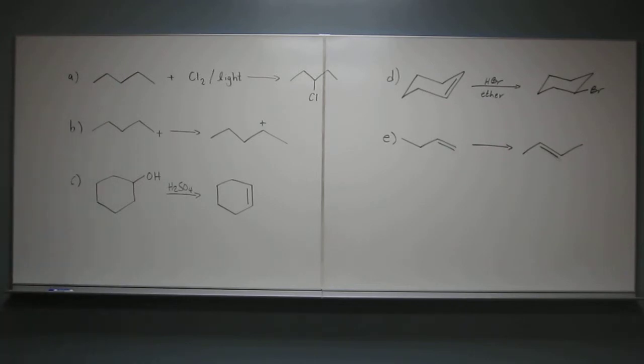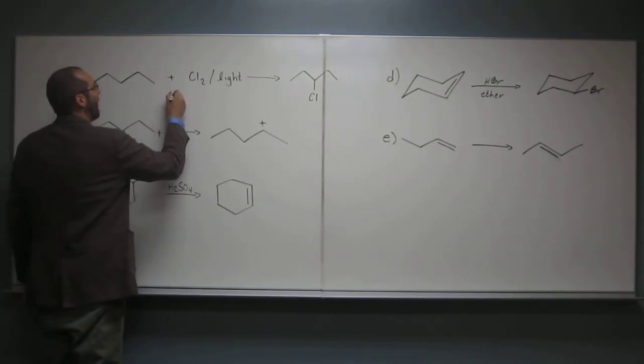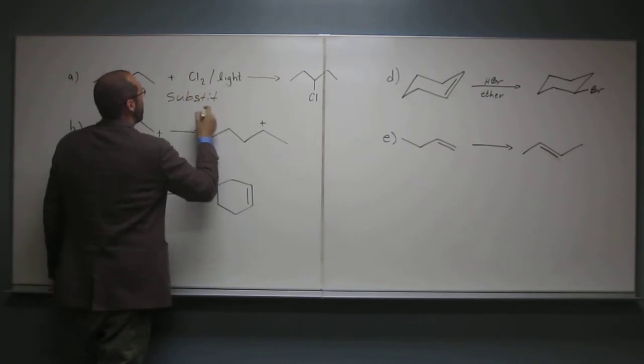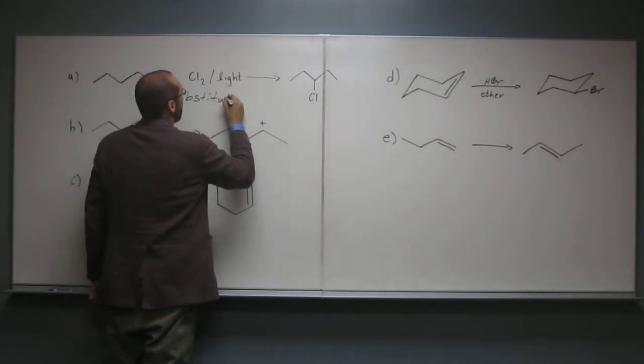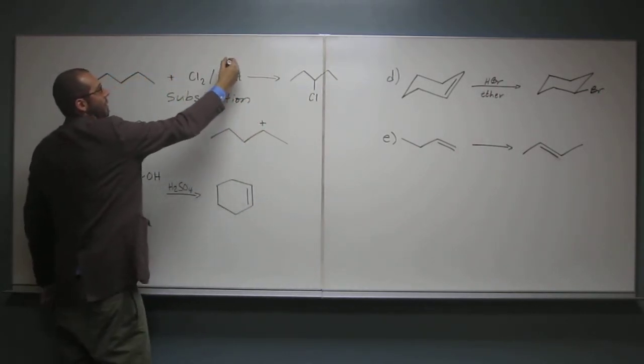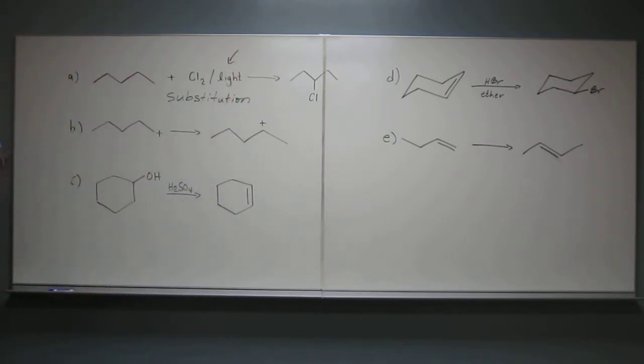Radical substitution. So it's a substitution reaction. You already took my second question away. No, it's a radical reaction, so that was the kind of substitution that is. So, substitution reaction, and this is a radical chlorination. You can see that because of the light. That really helps out a lot, okay, to identify that it's a radical reaction.